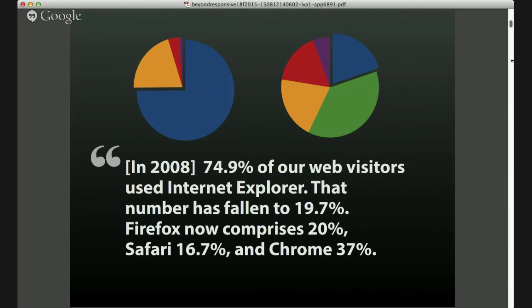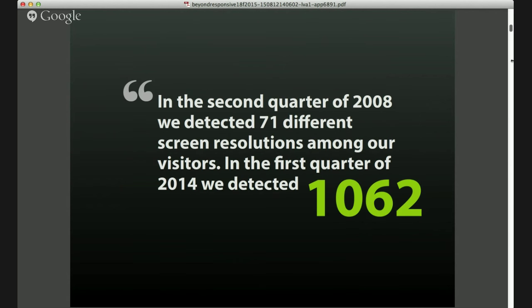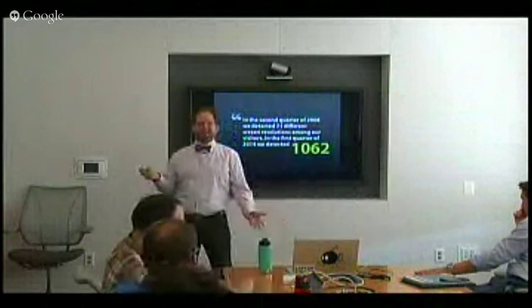Browsers went from being dominantly IE to being dispersed between IE, Firefox, Safari, and Chrome. And here's the kicker: in Q2 2008 they detected 71 different screen resolutions. By Q1 2014, that number had grown to 1,062 different screen sizes — which is why responsive design is so important as a visual design approach. You could not design 1,062 different comps.